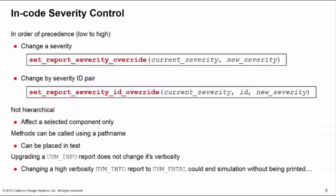Finally, be careful. If you upgrade a UVM info report, this does not change its verbosity. In the worst case you could have a high verbosity UVM info report that you upgrade to a UVM_fatal. The UVM_fatal will stop the simulation but because of the verbosity setting the message will not be printed and you'll end the simulation without knowing why.